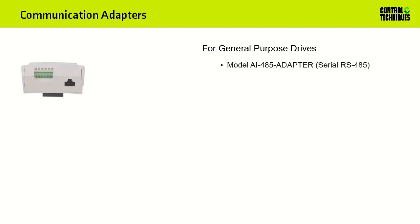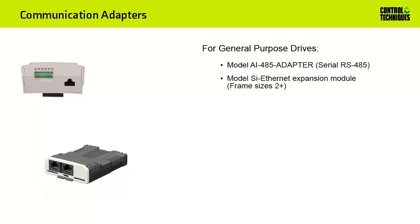For general-purpose drives, you'll require a model number AI-485 adapter to perform serial RS-485 Modbus communications using Modbus RTU. General-purpose drives, frame sizes 2 and larger, have an expansion slot that can accommodate a SI Ethernet module. Adding this module to a general-purpose drive will enable Modbus TCP-IP communication.